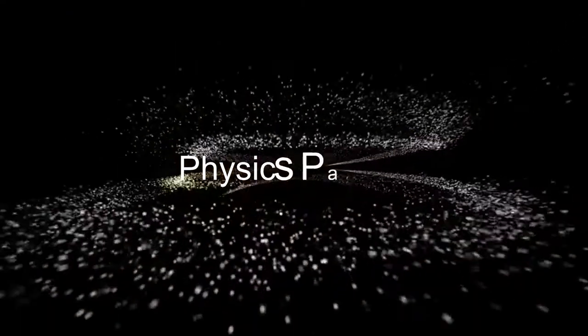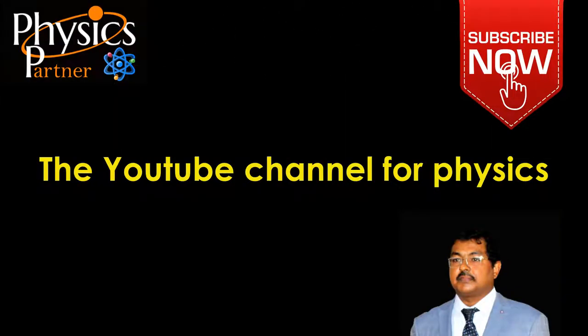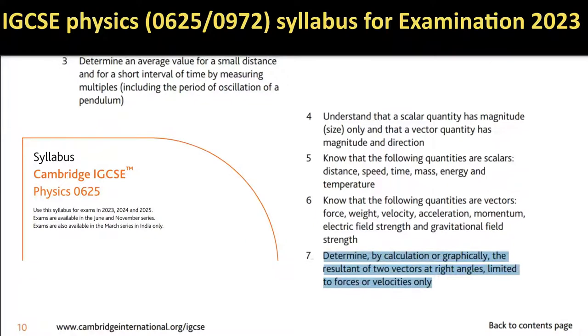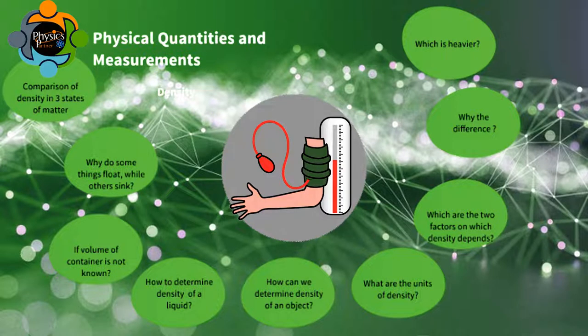Hello and welcome back to Physics Partner, the YouTube channel for physics. Please subscribe to my channel. Today we are going to discuss a newly injected topic in IGCSE physics curriculum for both the code 0625 and 0972 physics: the addition and subtraction of vectors by graphical method.